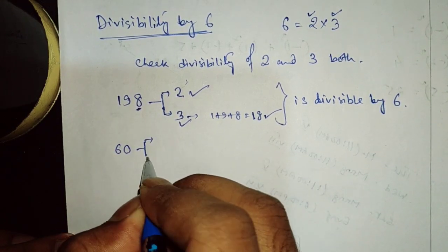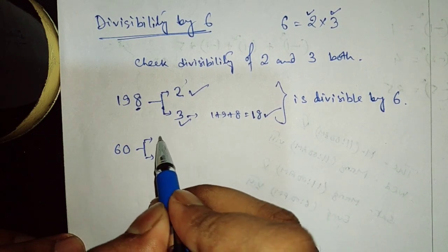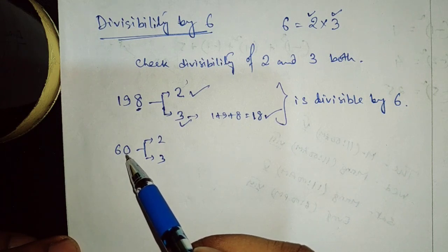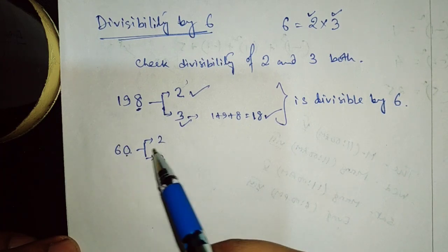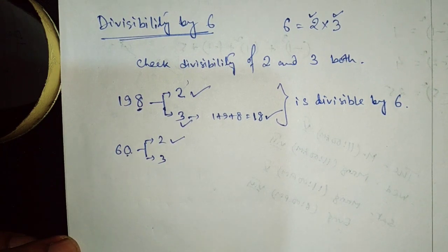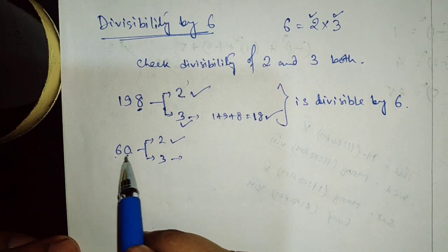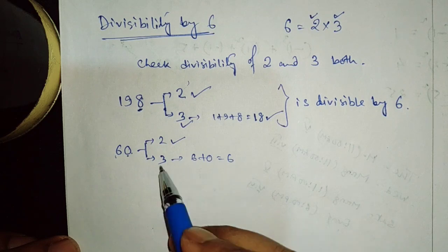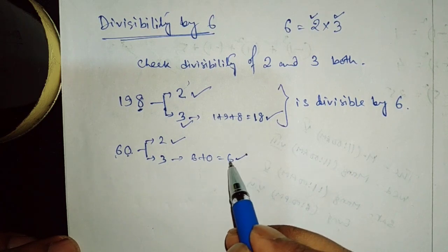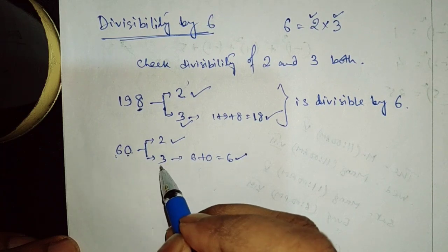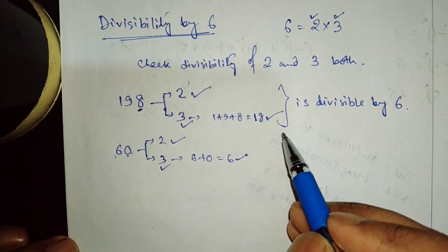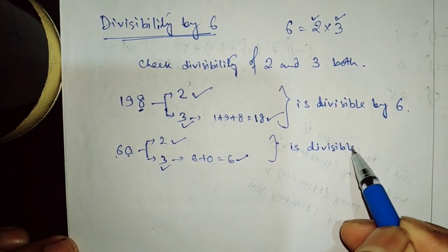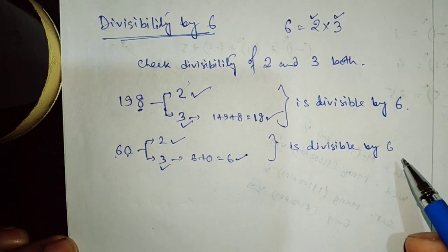Let us take another example: 60. We have to check divisibility of 60 by 2 as well as 3. Since the last digit is 0, it is obvious that 60 is divisible by 2. To check for 3, the sum of digits is 6 plus 0, which is 6. Since 6 is divisible by 3, 60 is divisible by 3 also. So 60 is divisible by 6.